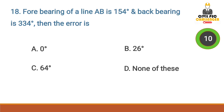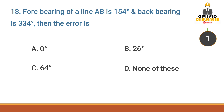For a bearing of a line, the fore bearing is 154 degrees and the back bearing is 34 degrees. The error is — Answer option A: 0 degrees. A fore bearing plus or minus 180 degrees gives the back bearing.